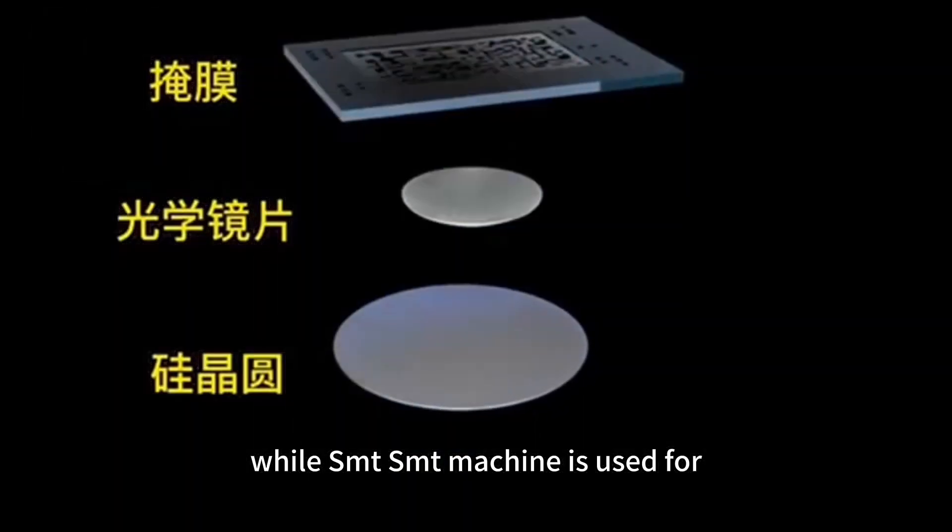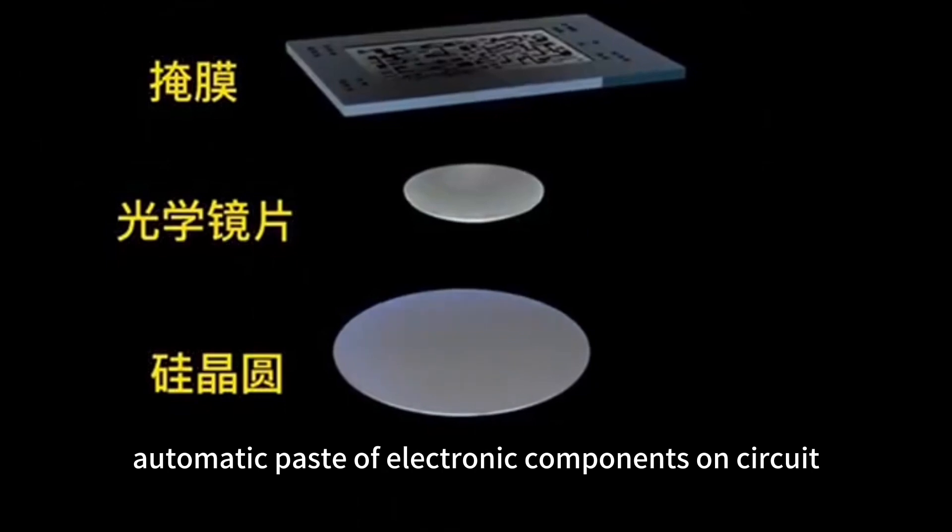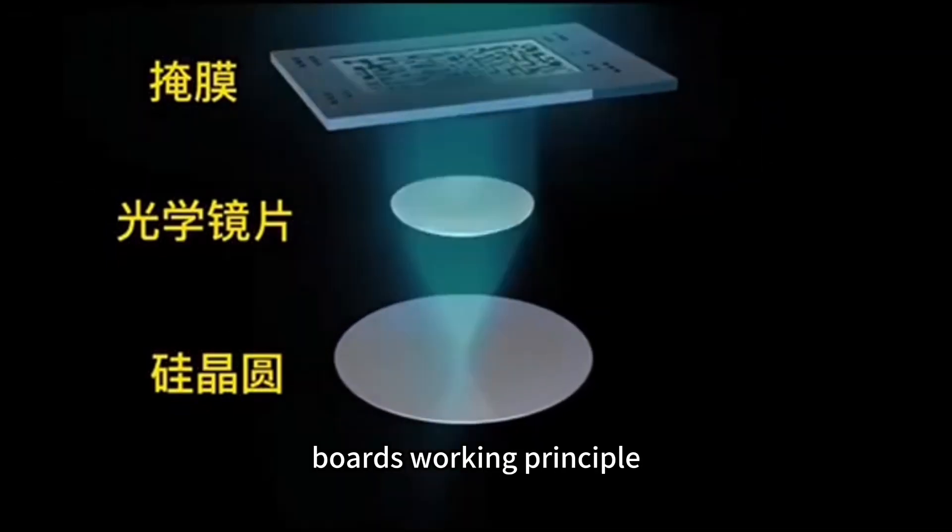While SMT machine is used for automatic paste of electronic components on circuit boards.